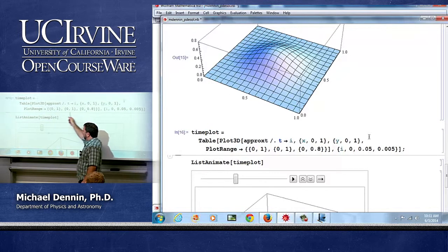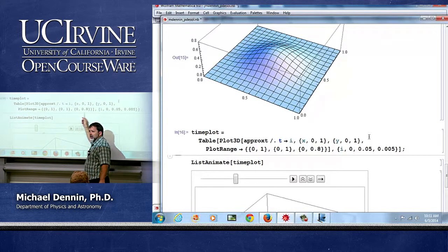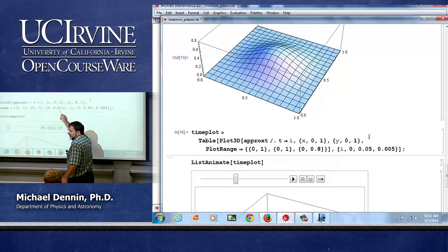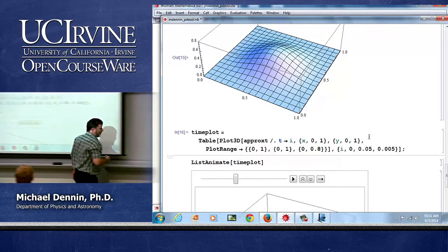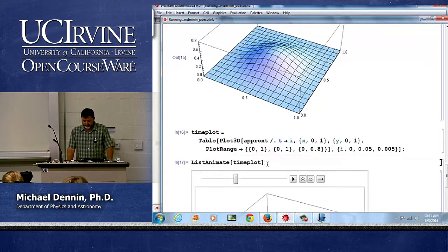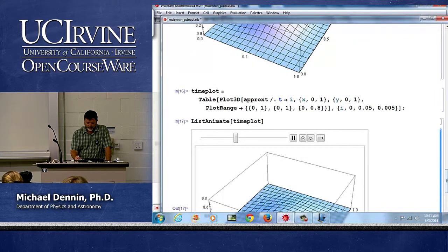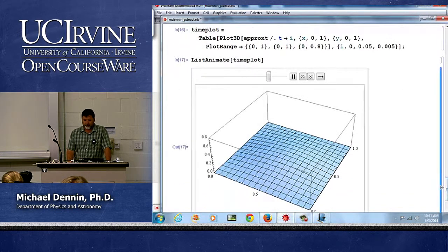Notice as I said yesterday on the last lecture, with this I'm going to fix my plot range so that it's not auto adjusting, particularly the z scale, so we can see what happens. And then I'm going to use list animate.